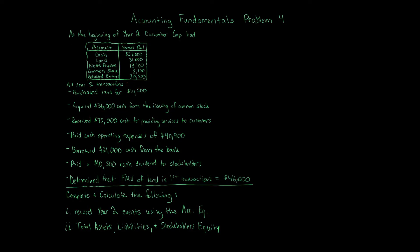Accounting Fundamentals Problem 4. At the beginning of Year 2, Cucumber Corp. had the following accounts and balances: Cash $21,000, Land $31,000, Notes Payable $13,100, Common Stock $8,100, Retained Earnings $30,800. All Year 2 transactions are as follows: Purchased land for $10,500; Acquired $36,000 cash from issuing Common Stock; Received $75,000 cash for providing services to customers; Paid cash operating expenses of $40,900; Borrowed $21,000 cash from the bank; Paid a $10,500 cash dividend to stockholders; Determined that the fair market value of land in the first transaction equals $46,000.